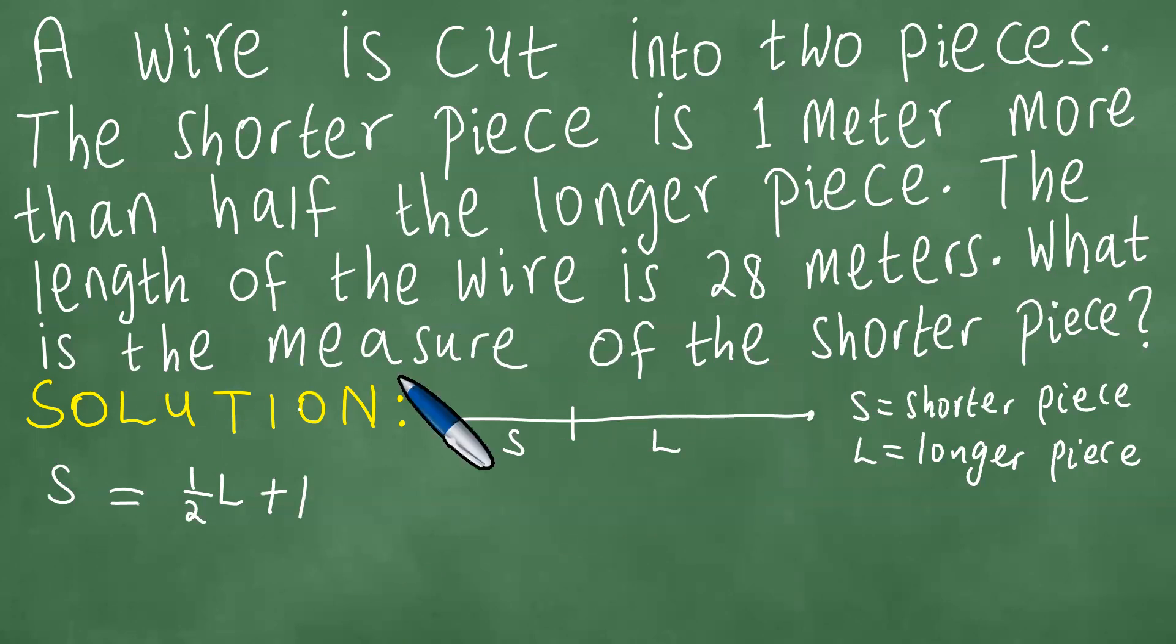Right. The length of the wire is 28 meters, and that means the shorter piece plus the longer piece actually equals 28 meters. So, what does this mean to us? What this means is a couple of things, and we can call this one equation one, and we can call this one equation two.